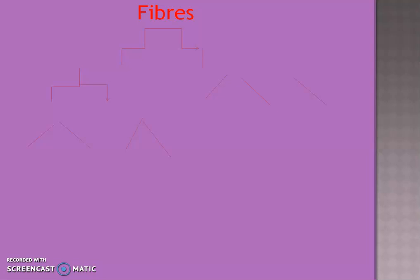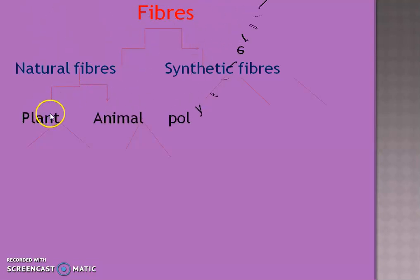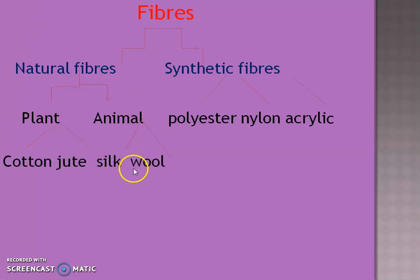On the basis of sources, fibers are classified into two categories: natural fibers and synthetic fibers. Natural fibers are obtained from plants and animals. Cotton and jute are examples of fibers obtained from plants, while silk and wool fibers are obtained from animals.